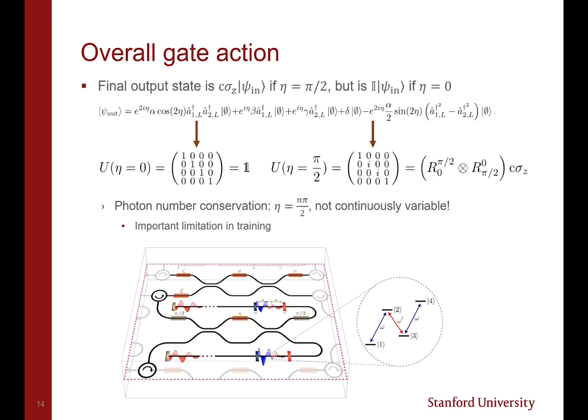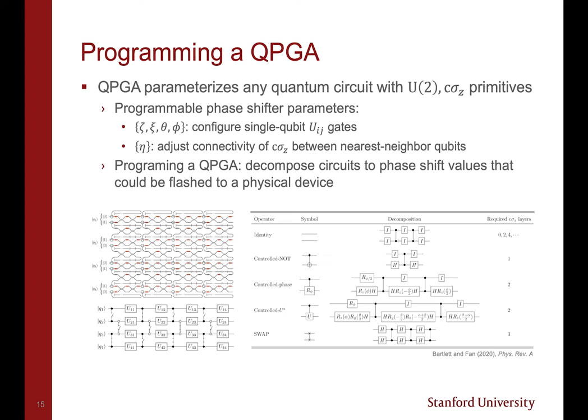Because photon number must be conserved within each pair of waveguides, η is not a continuously variable parameter, which is an important limitation when we train simulated QPGAs, which I will discuss shortly.